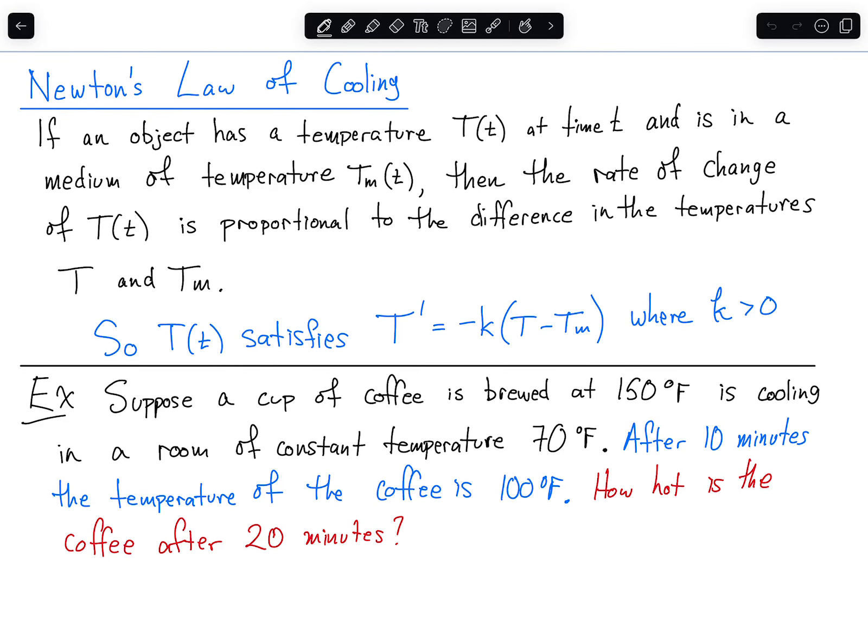So Newton's law of cooling says that if a temperature of an object is capital T and the temperature of the medium, like the room that it's in or whatever medium it might be in, like air or water or space, whatever the ambient temperature is, that's Tm, then the rate of change of the temperature of the object is proportional to the difference in the temperatures of T, the current temperature of the object, and Tm, the temperature of the surrounding area that the object is in, also known as the medium that the object is in, which means that T prime is equal to some proportional constant times T minus Tm, and we write that as T prime equals negative K times the quantity T minus Tm. So let's use that to work with this example.